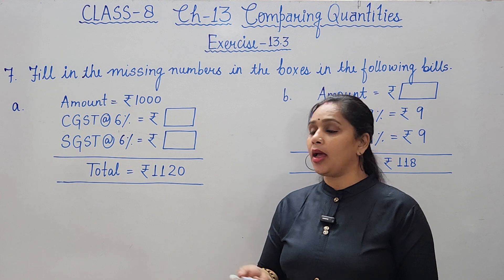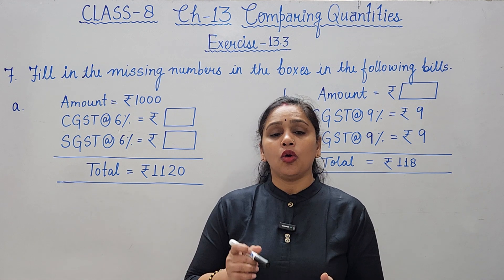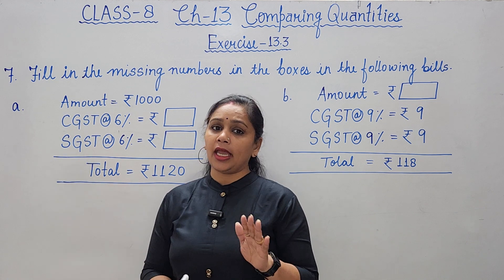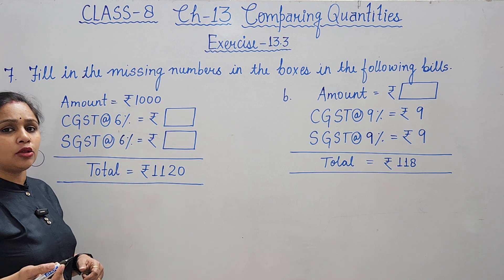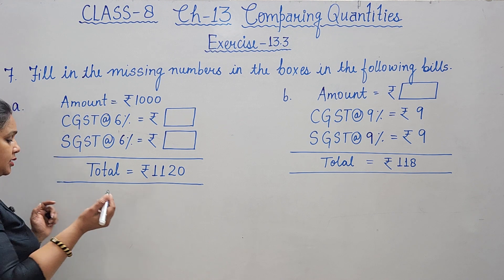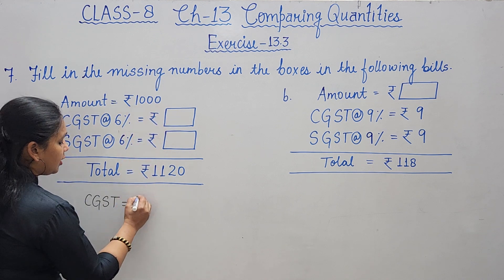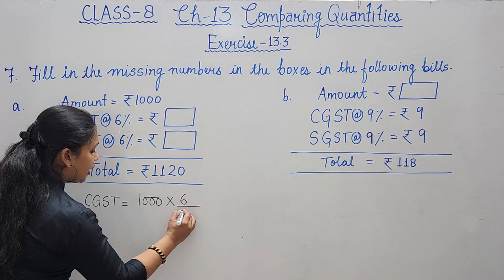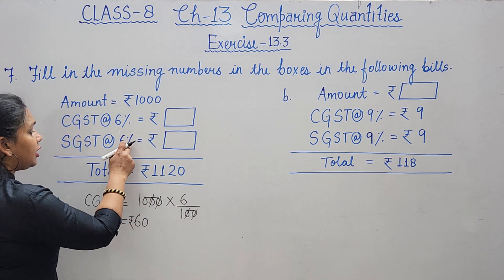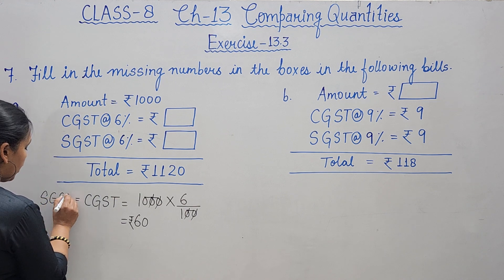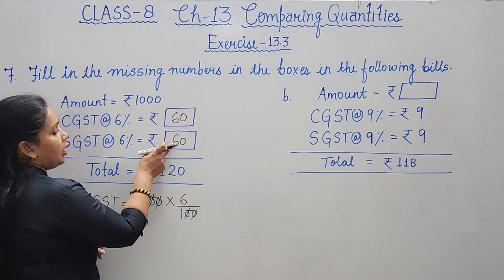GST given is 6+6 = 12%. To find CGST: 1000 × 6/100 = 60 rupees. Similarly SGST is also 60 rupees, because both are always equal. So CGST = 60 rupees and SGST = 60 rupees.